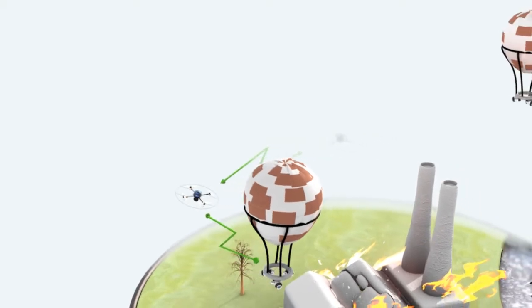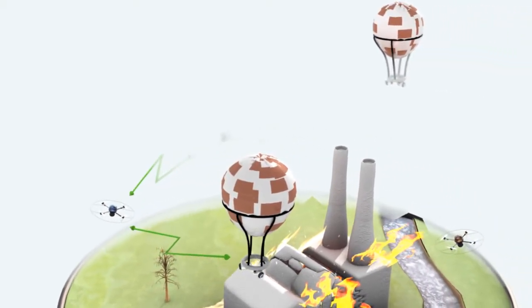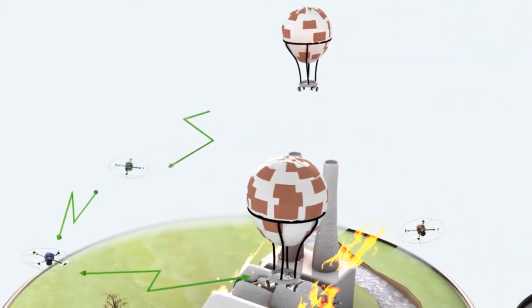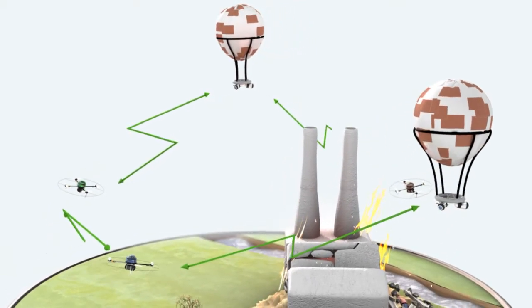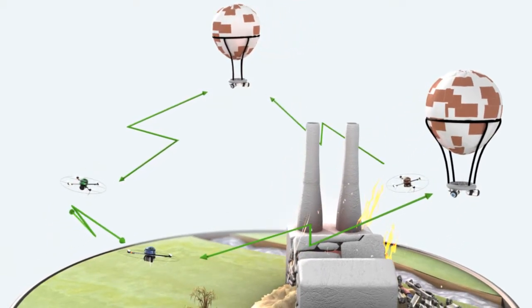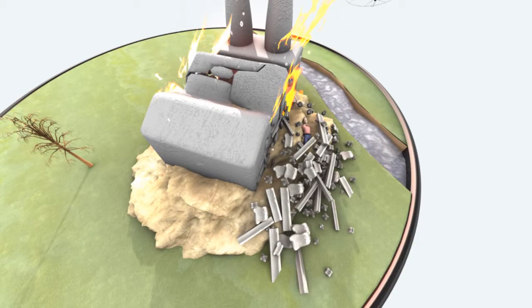For this reason, researchers of Fraunhofer are developing the project Seneca. This means a mobile robot sensor network for disaster management, in German Sensor Netzwerk mit mobilen Robotern für das Katastrophenmanagement.